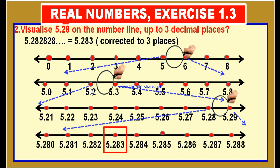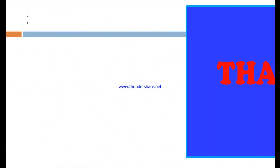This is how we visualized a non-terminating and recurring decimal on the number line, and previously in the first question we visualized a terminating decimal on the number line. As it is a non-terminating decimal, you may make any number of steps using the same procedure. The links of introduction to real numbers and the questions and solutions from exercise 1.1, 1.2 and 1.3 are provided in the description — click whichever link you need to revise the chapter. Thank you one and all.